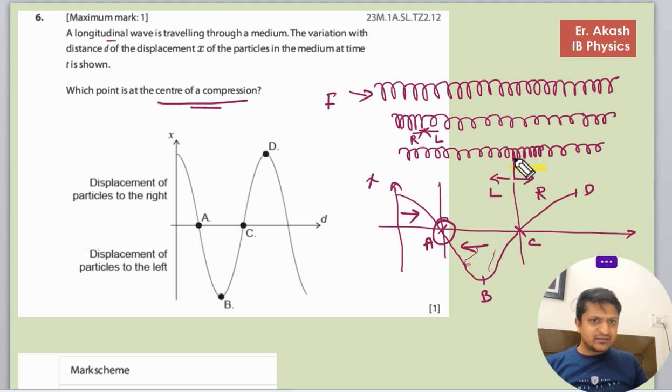At this point, this will go in this direction and this is already gone in that direction, so it will expand. So this is the point of expansion and this is the point of compression.